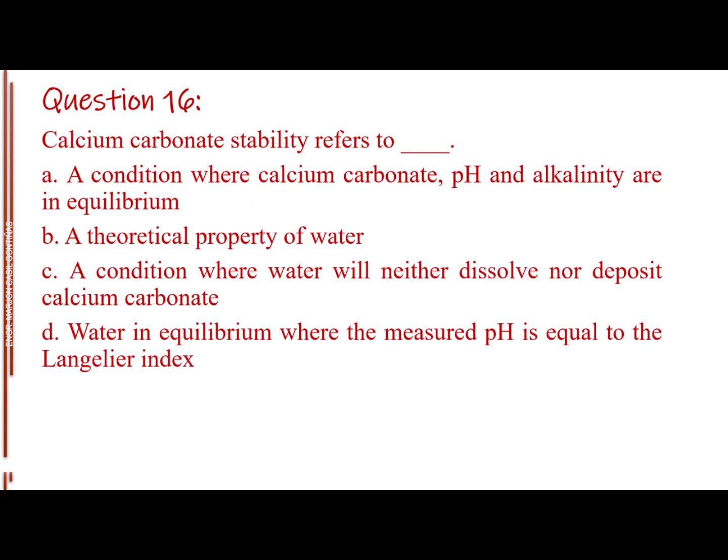Question number 16. Calcium carbonate stability refers to blank. Letter A, A condition where calcium carbonate, pH, and alkalinity, are in equilibrium. Letter B, A theoretical property of water. Letter C, A condition where water will neither dissolve, nor deposit calcium carbonate. Letter D, Water in equilibrium where the measured pH is equal to the Langelier Index. The answer is Letter C, A condition where water will neither dissolve, nor deposit calcium carbonate.